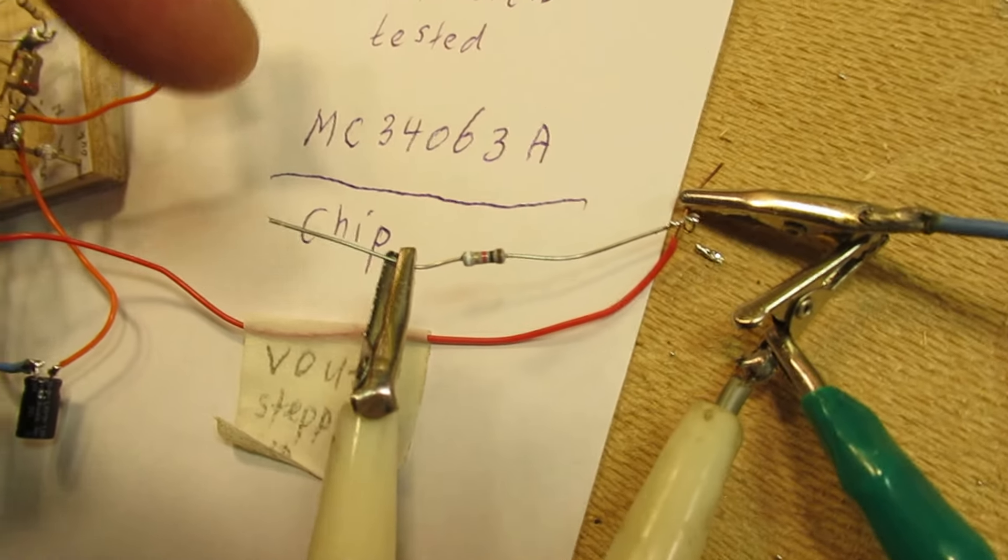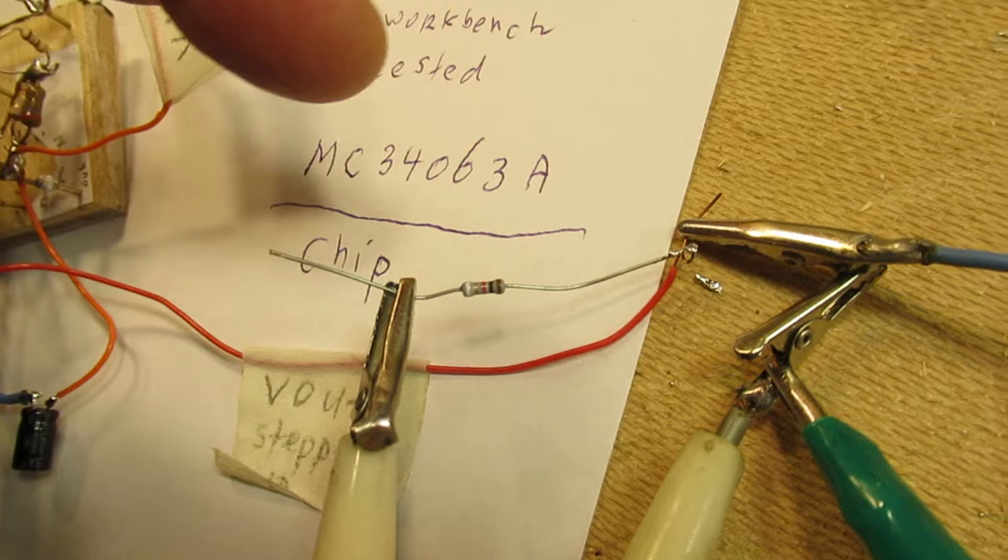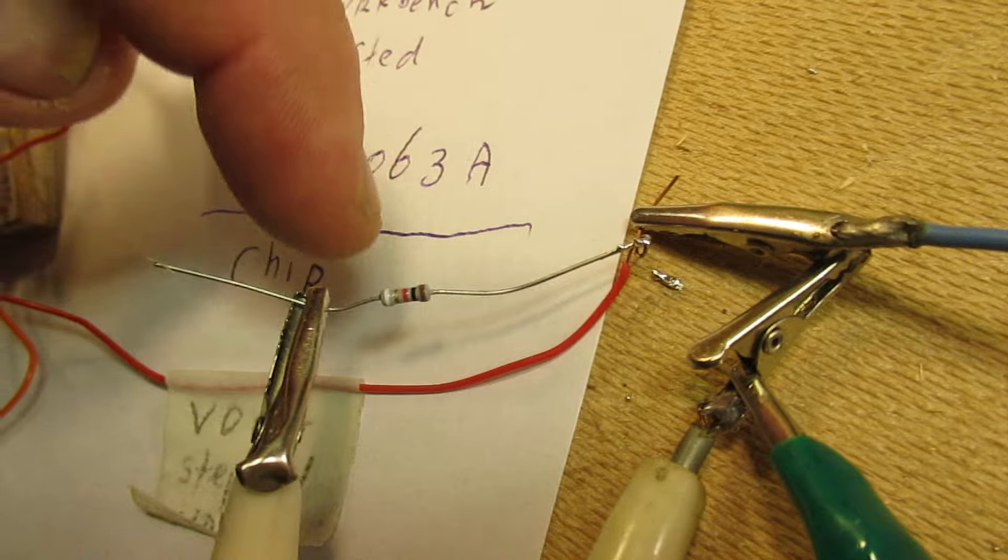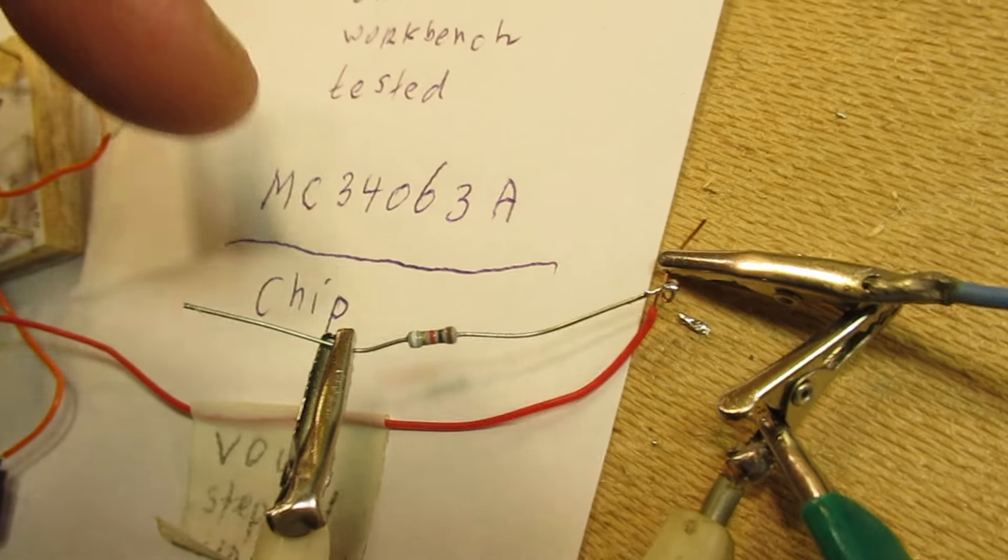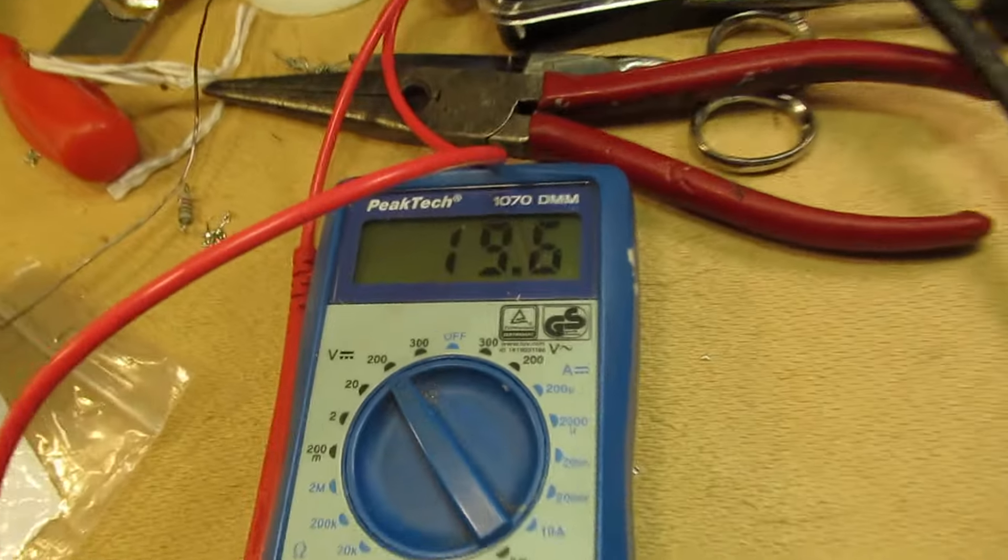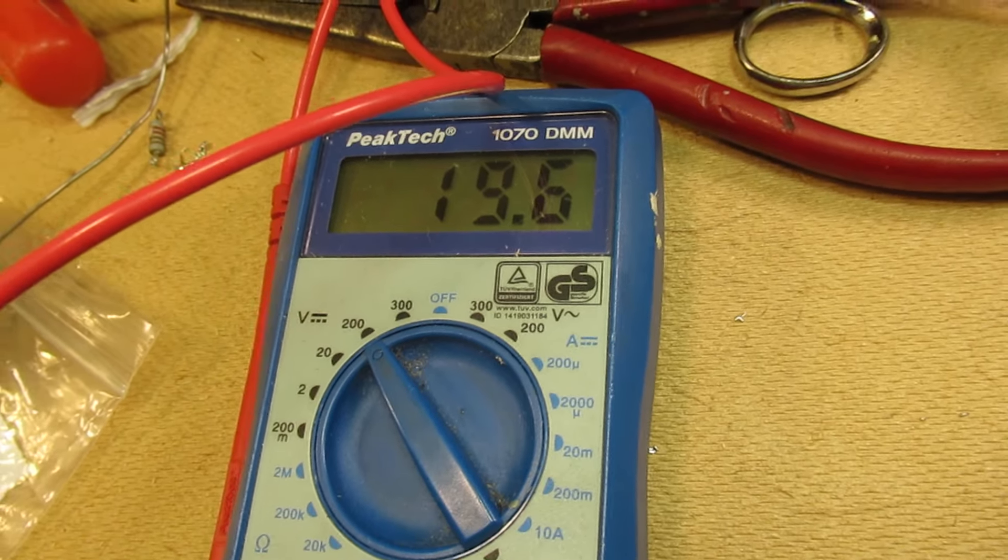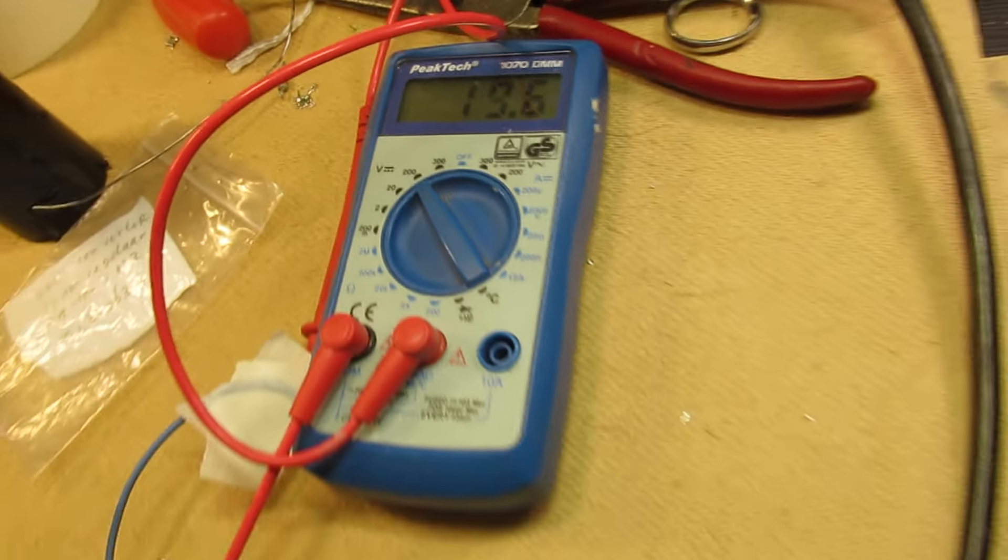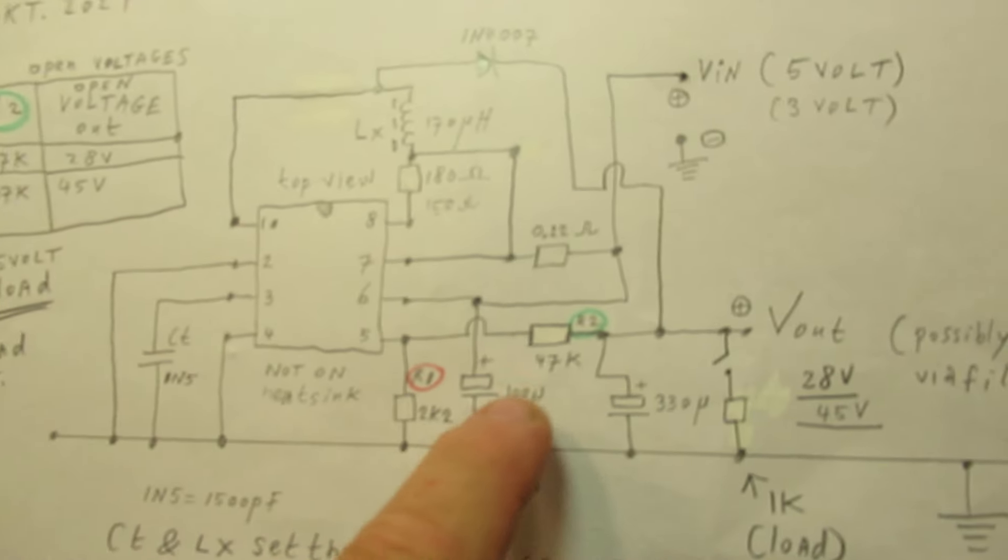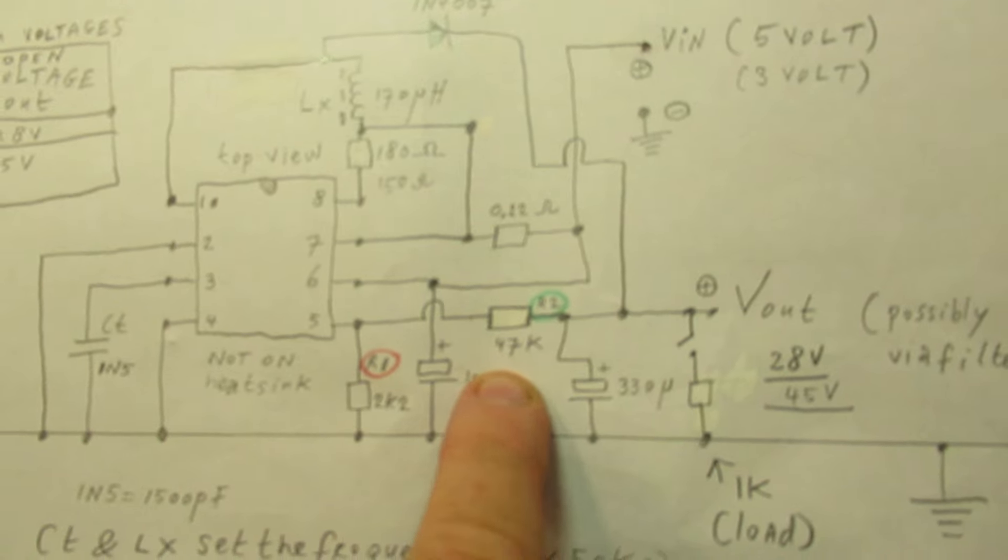I think I don't measure it because I don't want to pay too much attention to this test. But perhaps here there is one milliampere flowing or so. Of course you can calculate that with Ohm's law. We now have an input voltage of 6 volts, output voltage of 19.6 volts, and a certain current that is flowing when we use here that 2k2 resistor and that 47k resistor.